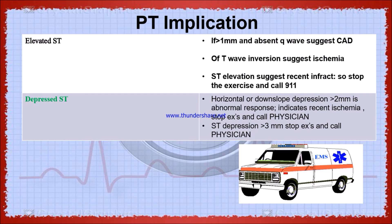When there is ST elevation myocardial infarction greater than 1 mm and absent Q wave, it suggests the patient has coronary artery disease. If ST elevation is greater than 2 mm, we need to stop the exercise immediately, because when there is ST elevation there will be an infarcted area, which is more dangerous for the patient. We need to stop the exercise, call the physician, as well as 911 if the patient is having major symptoms, so they can be taken to the hospital.